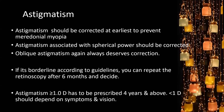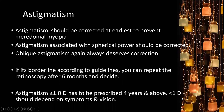Astigmatism should be corrected as early as possible to prevent meridional amblyopia — which is one of the toughest amblyopias to treat. Astigmatism associated with spherical power should be corrected. Oblique astigmatism always deserves correction. If borderline according to guidelines, repeat retinoscopy after six months — if same readings, prescribe. More than one diopter of astigmatism in a child four years and above must be prescribed. Less than one diopter: depends on symptoms and visual acuity.